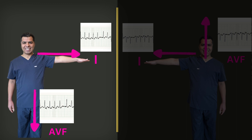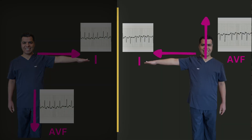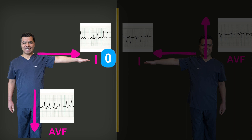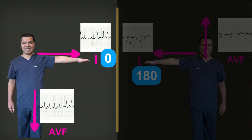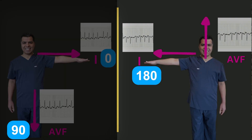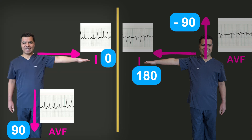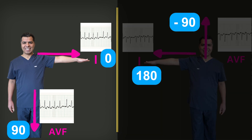If positive in lead 1, the force goes toward my stretched left arm; if positive in lead AVF, it goes down my left leg. If the net QRS deflection is negative — R wave smaller than S wave — the force goes in the reverse direction: through my stretched right arm if negative in lead 1, and upward through my head if negative in lead AVF. In degrees: positive lead 1 means 0 degrees, negative means 180 degrees; positive AVF means 90 degrees, negative AVF means minus 90 degrees. Normally, both leads produce a positive net QRS deflection, directing the average force between 0 and 90 degrees — this is what we call the cardiac axis.